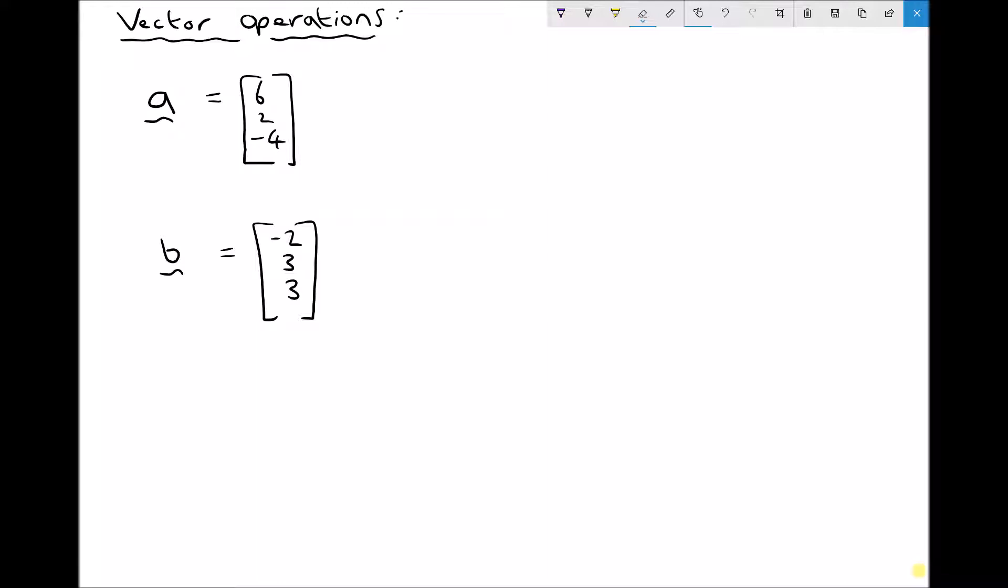So if we want to multiply a vector by a scalar we can do the following. And let's perform the following operation. Let's do 3 times vector A minus 2 times vector B.